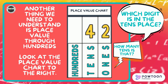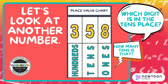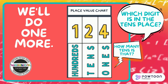Another thing we need to understand is place value through hundreds. Look at the place value chart to the right. Which digit is in the tens place? How many tens is that? Did you say 4 is in the tens place? That 4 tens is worth 40. Let's look at another number — which digit is in the tens place? How many tens is that? We'll do one more. Which digit is in the tens place? How many tens is that? Did you say there's a 2 in the tens place? And it's worth 2 tens? 2 tens is equal to 20. Good job!